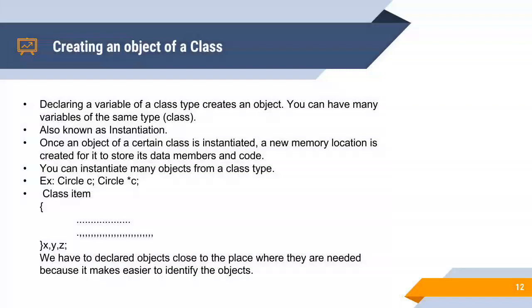Once an object of a class is instantiated, a new memory location is created for it to store its data members and code. If we have a class defined, then the data members of a class don't have memory. Only the object has memory.